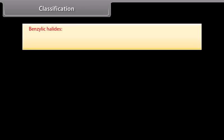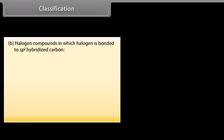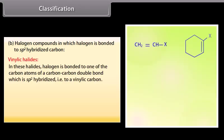Benzylic halides. In these halides, the halogen atom is bonded to a sp3 hybridized carbon atom next to an aromatic ring, that is to a benzylic carbon.